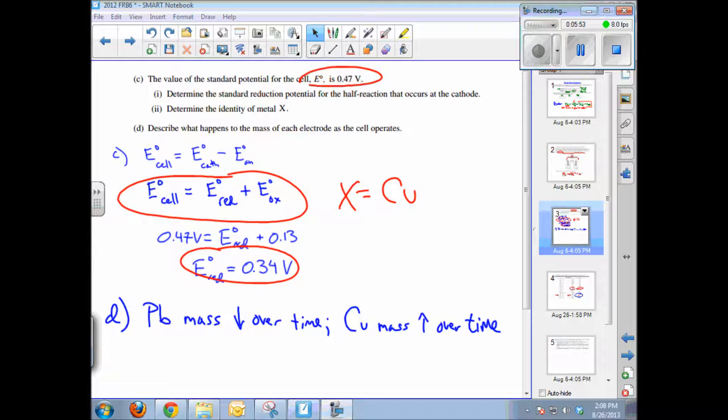Part D of this question asks you to describe what happens to the mass of each electrode as the cell operates. I've written the answer there. Lead mass decreases over time. The copper electrode mass increases over time. Let's think about why.